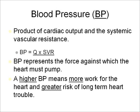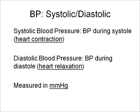Blood pressure, or BP, is a product of cardiac output and the systemic vascular resistance. BP equals Q times SVR. BP represents the force against which the heart must pump. A higher BP means more work for the heart and a greater risk of long-term heart trouble. Blood pressure has systolic and diastolic components. Systolic blood pressure is blood pressure during systole, which is heart contraction. Diastolic blood pressure is BP during diastole, which is heart relaxation.